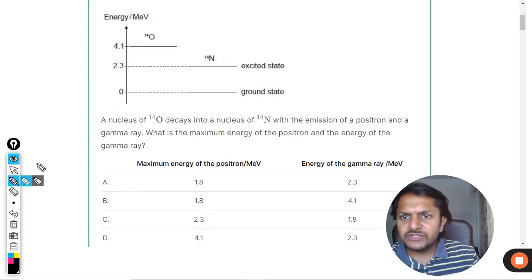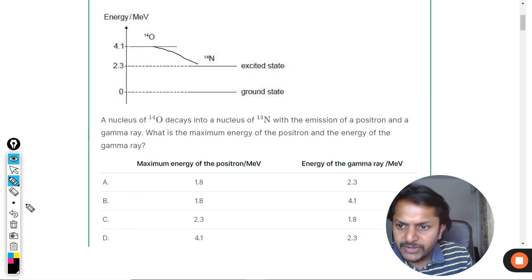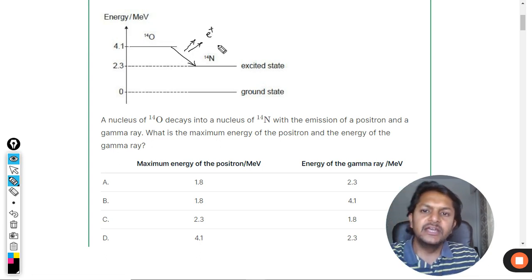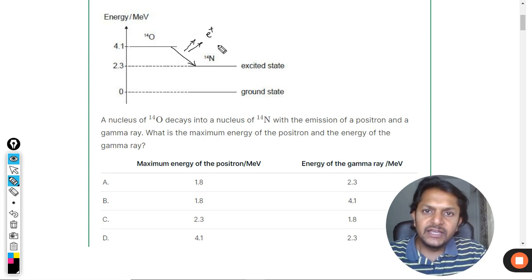So what we do here is we must know that when this transition is taking place, the oxygen nucleus is converted into nitrogen. A beta particle or positron is emitted. Now when the positron is emitted...